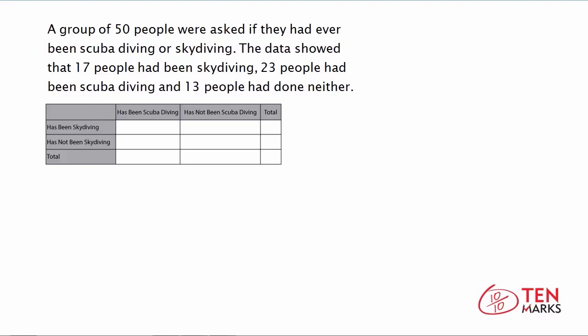Let's use some of this information. We need to know the total number of people — a group of 50 people were surveyed, so this is the size of the sample group. We're dealing with 50 people in all. The data showed that 17 people had been skydiving, 23 had been scuba diving, and 13 had done neither. I'm going to put these numbers into the table accordingly.